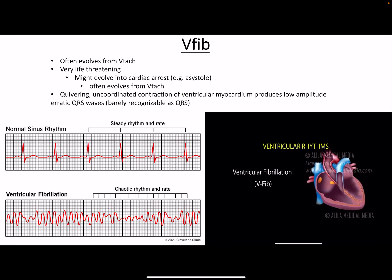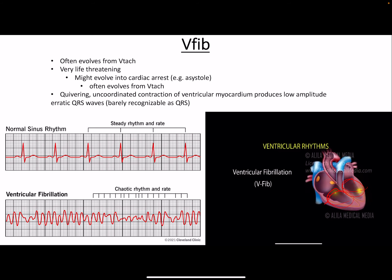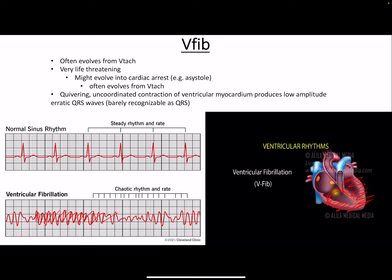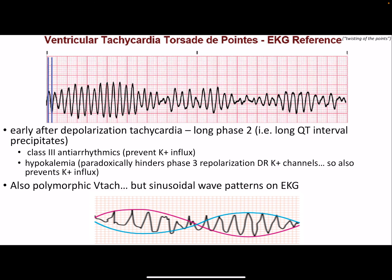VFib is completely uncoordinated contraction — too much firing in random directions. There's no actual coordinated contraction, so blood is ejected very ineffectively. On the EKG it looks like small-amplitude chaotic noise, similar to what we saw with AFib. This can evolve into cardiac arrest and often evolves from VTach.